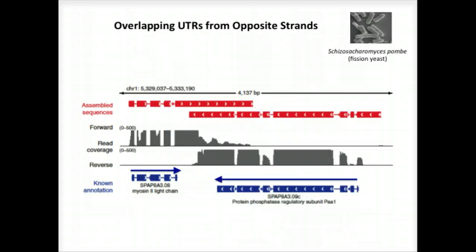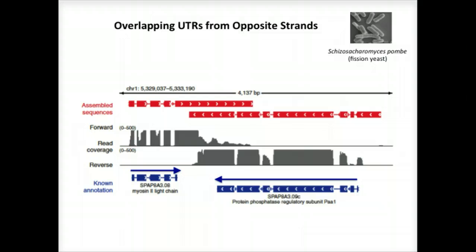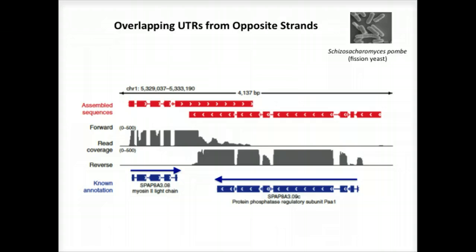Strand-specific RNA-seq is tremendously useful when applied to organisms that have compact genomes. Here's an example from Schizosaccharomyces pombe, or fission yeast, where we have two known genes that are transcribed on opposite strands and point towards each other. We have strand-specific RNA-seq data and the coverage plots shown for each. You can see that there's overlap in the coverage in the UTR regions, the untranslated regions, shown in the center. Without strand-specific data, we'd reconstruct a single transcript covering both genes. Because we have strand-specific data, Trinity is able to separately reconstruct these transcripts, allowing for overlap among the UTRs.